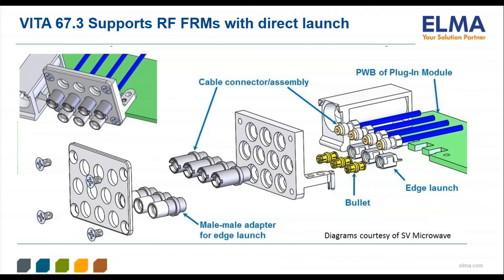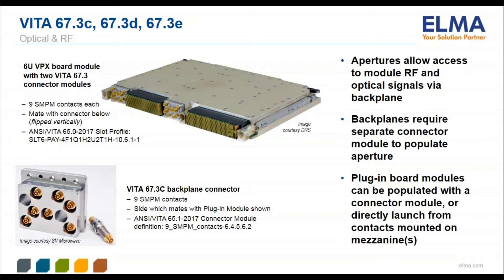This is an example of two different types of contacts that can be used on Vita 67.3 apertures. In the upper right-hand corner you can see four cable assemblies that would be snapped into the top row. Below that you see edge launch contacts that might be used to launch directly from a mezzanine and/or the baseboard. The contact row spacing can be unique to the customer's application.